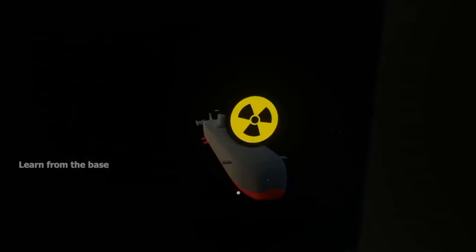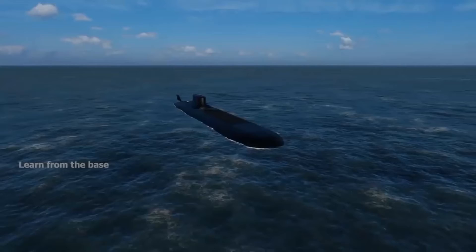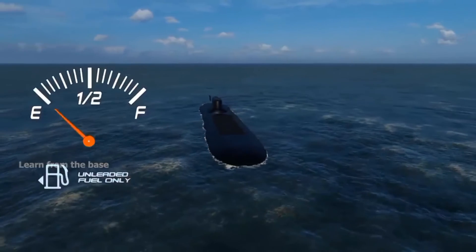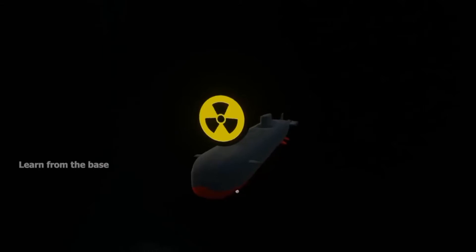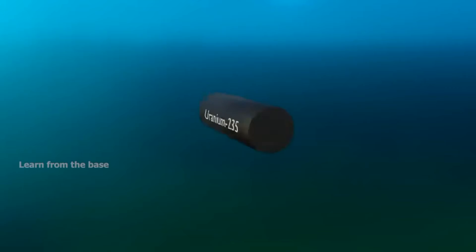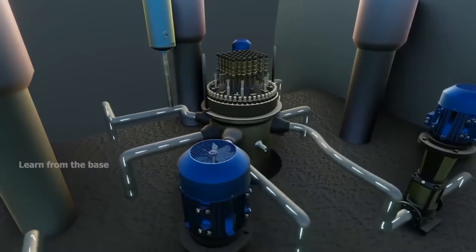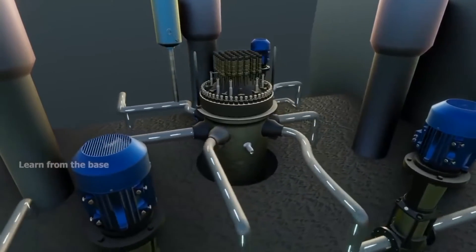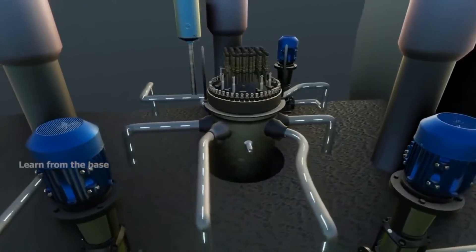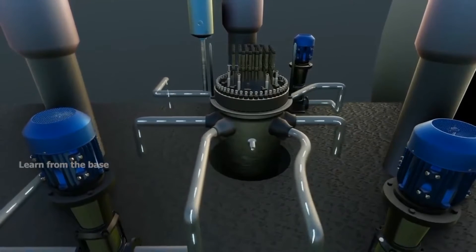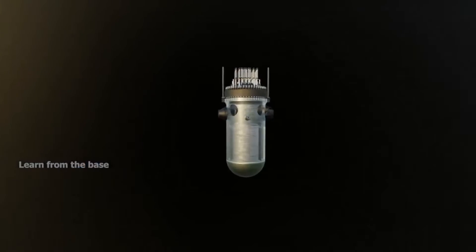One of the main advantages of nuclear powered submarines is they do not require refueling. When one enters into service, it will be commissioned with enough uranium fuel to last more than 30 years. The Typhoon class submarine is equipped with two pressurized water reactors. Let's see how these nuclear reactors work.